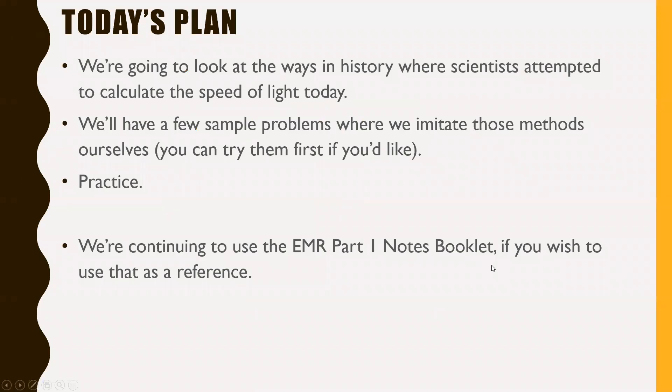So here's today's plan. We're going to look at the ways in history where scientists attempted to calculate the speed of light. We'll have a few sample problems where we imitate those methods ourselves, and you can actually try them first if you like. So you can pause this video when we get to those, give them a try on a piece of loose leaf and then watch how I go over them if you wish. If you don't want to do that, you don't have to. And then of course, we'll get some practice time in as well.